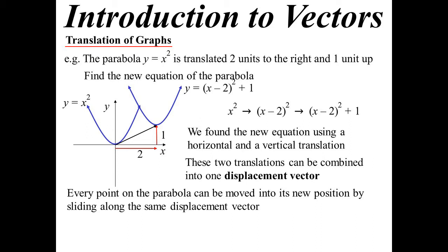So whilst I've got it there, I could put it there or there or there — every single point I could do that to. It's the same vector each time. All I'm doing is adding that vector to every single point and I get this new parabola. So it's a different way of thinking about translations.